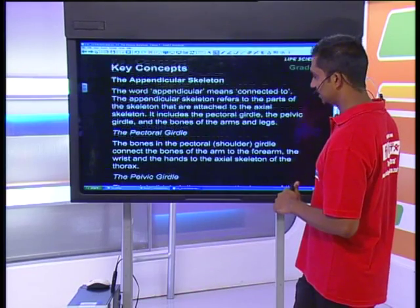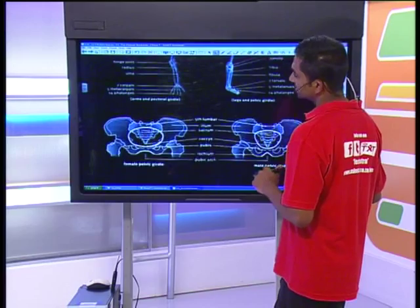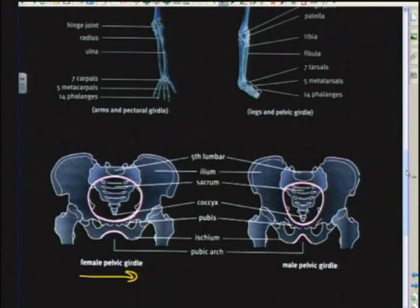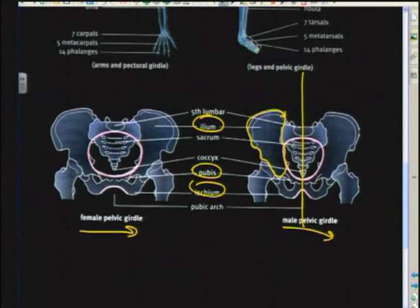Moving on to the appendicular skeleton — we spoke about the two girdles: the pectoral girdle and the pelvic girdle. The pelvic girdle has two halves, and each half is made up of three bones: the ilium, the ischium, and the pubis. These three bones are fused together to form each half of the girdle. We'll compare the female and male pelvic girdles in a little while.